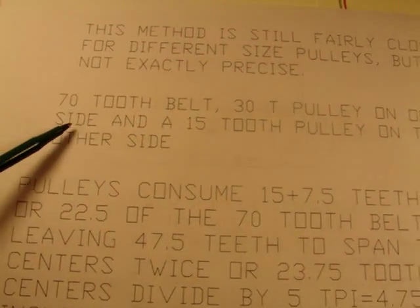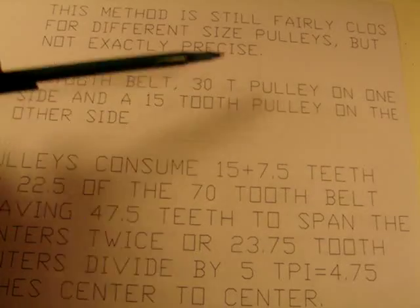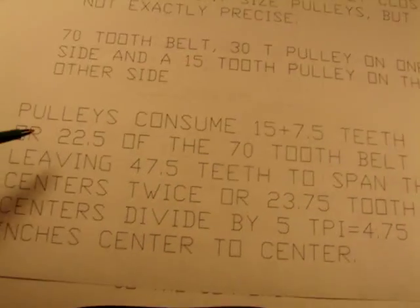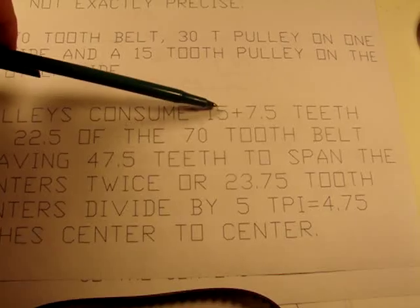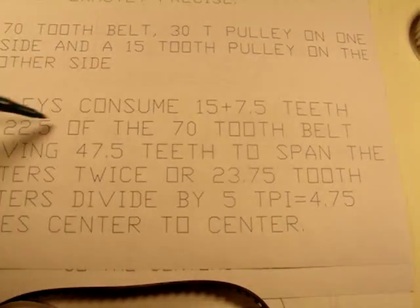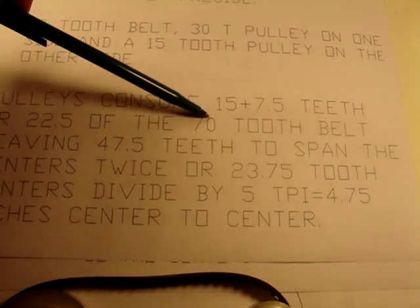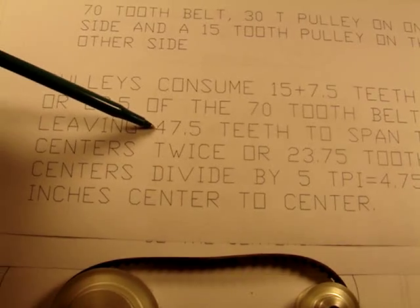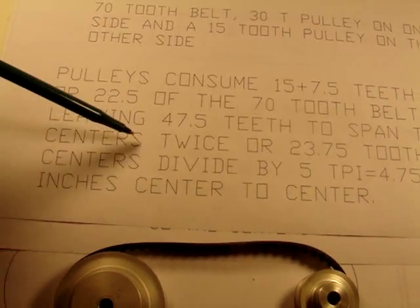A 70-tooth belt, 30-tooth pulley on one end, and a 15 on the other end. The pulleys consume 15 plus 7½ teeth, or 22½ teeth of the 70-tooth belt, leaving 47½ teeth to span two centers.